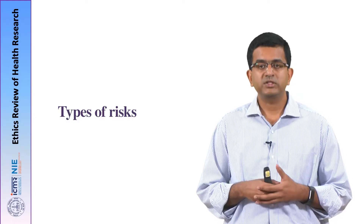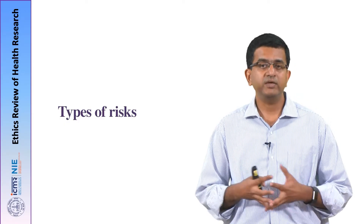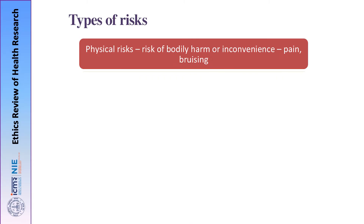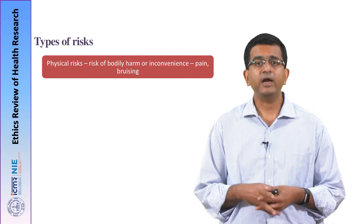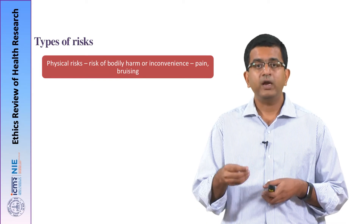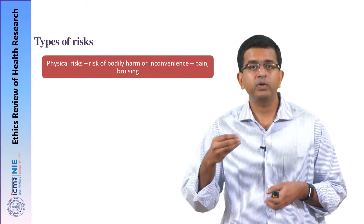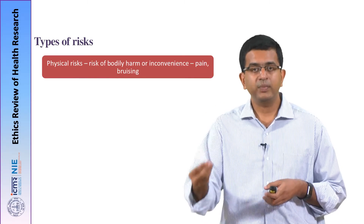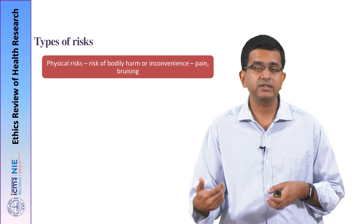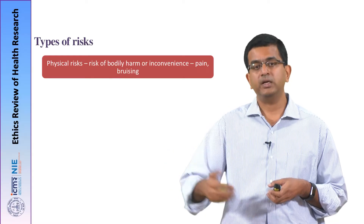Now let us look at the various types of risks of participating in a research project with examples. First and foremost is physical risk — that is, bodily harm or physiological and biological harms that can happen due to participating in a research project. A typical example is adverse events following administration of a drug in a drug trial, or during the process of collecting a blood sample, bruising, excess bleeding, pain, or syncopal attacks — all these are biological or physical risks.